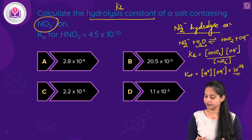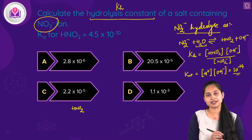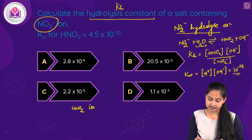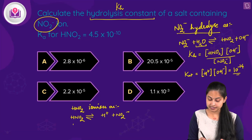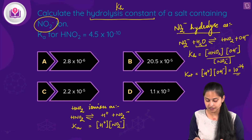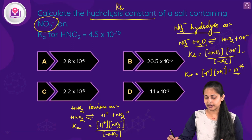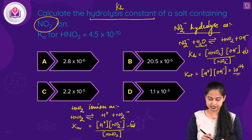Nitrous acid HNO₂ ionizes as: HNO₂ → H⁺ + NO₂⁻. The dissociation constant Ka = [H⁺][NO₂⁻] / [HNO₂]. This is labeled as the second equation, with the hydrolysis expression as the first equation.